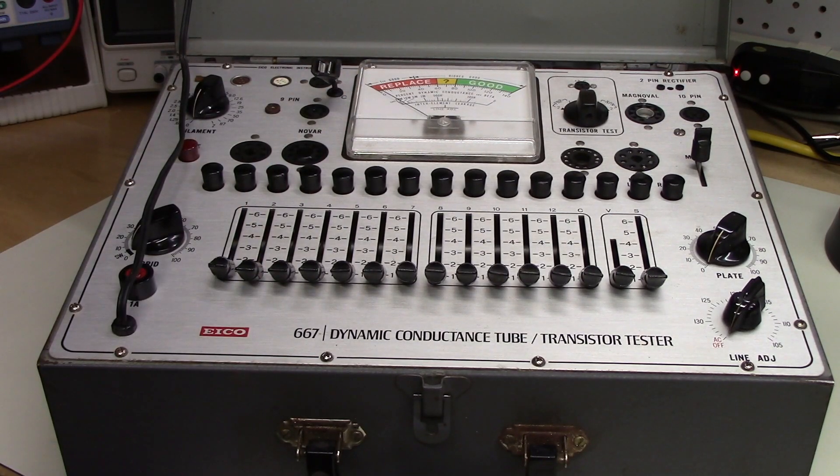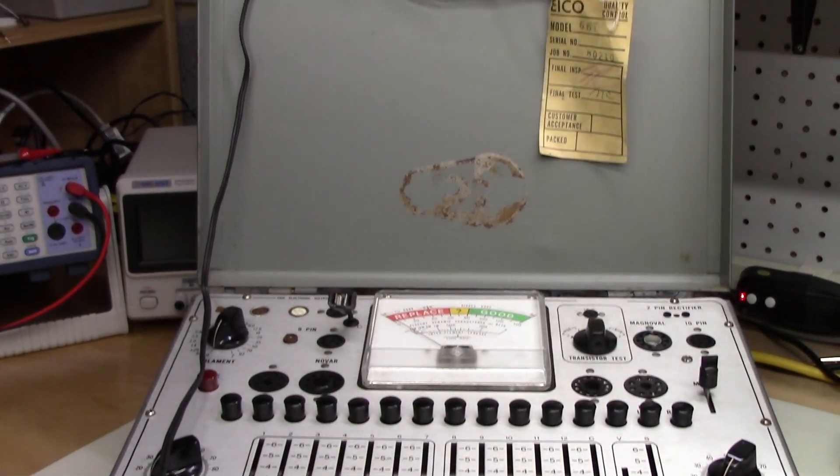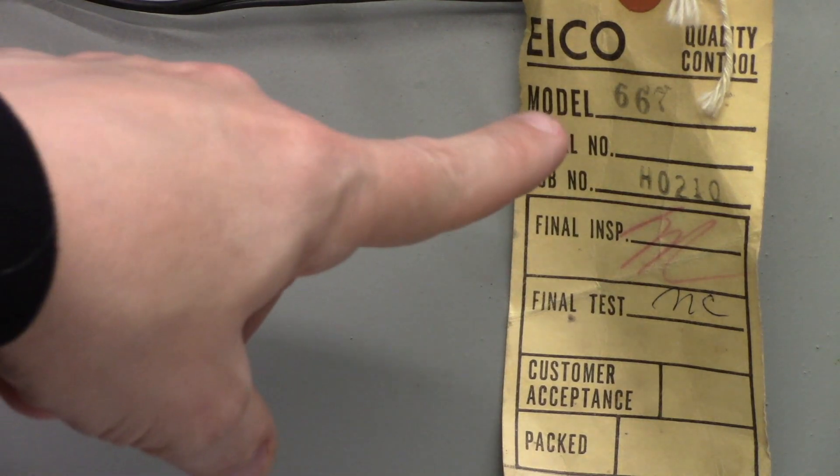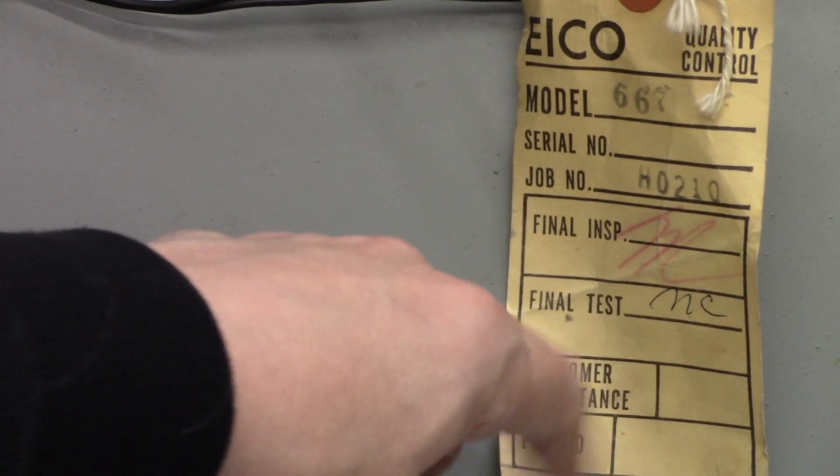What moved me to get this ICO is in the picture on the online auction was this tag. The tag is a factory quality control tag. We have not only the model number, but the job number and the initials of the final inspector and the person who tested it. This is a very good sign and it suggests that this was a factory assembled item and not something that was built in a home workshop.